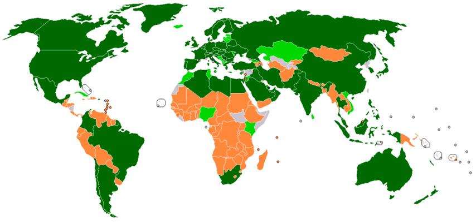The IEC is made up of members called national committees, and each NC represents its nation's electrotechnical interests in the IEC. This includes manufacturers, providers, distributors and vendors, consumers and users, all levels of governmental agencies, professional societies and trade associations, as well as standards developers from national standards bodies. National committees are constituted in different ways: some NCs are public sector only, some are a combination of public and private sector, and some are private sector only. About 90% of those who prepare IEC standards work in industry.